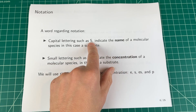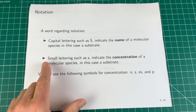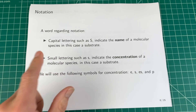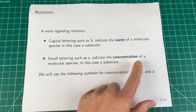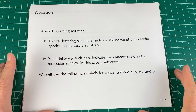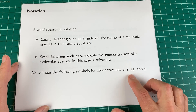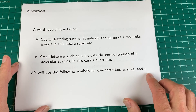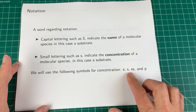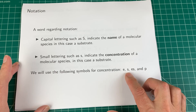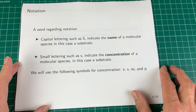One last thing on notation: I'm going to use capital letters to indicate the name of a molecular species — capital S means substrate, capital E means enzyme. To represent concentration, I'll use lowercase letters — little s indicates the concentration of substrate. There are four potential species: E, S, ES, and P, all represented by lowercase letters. We'll mostly use little e, little s, and little ES.